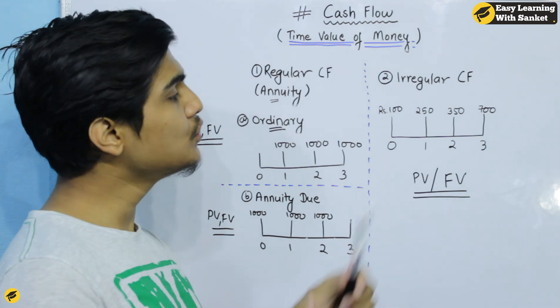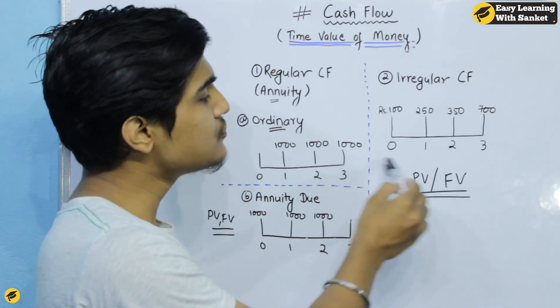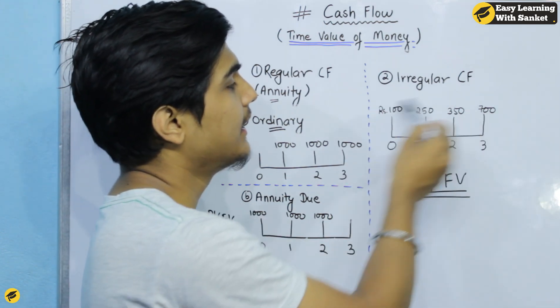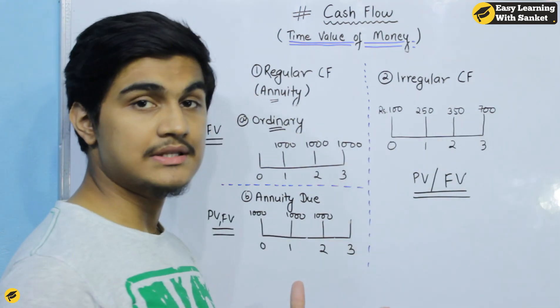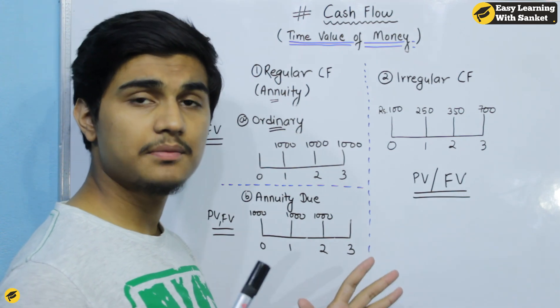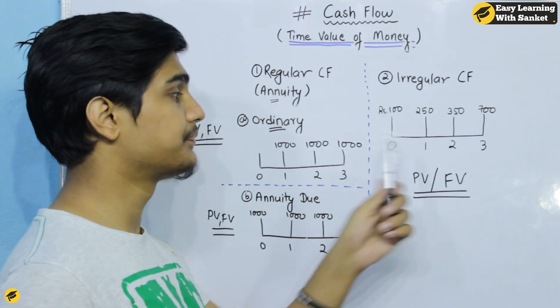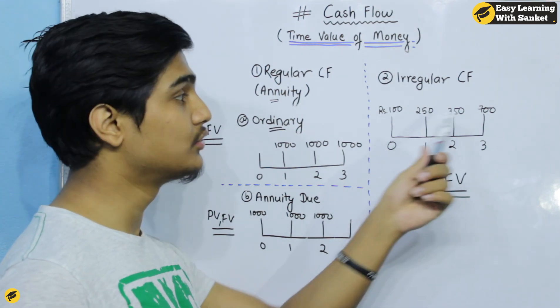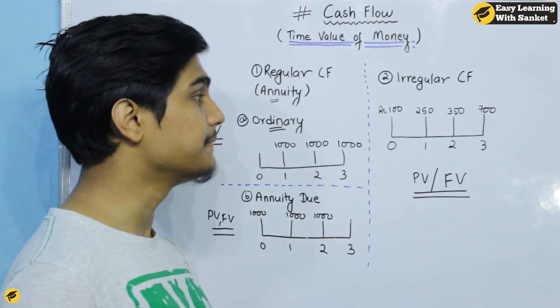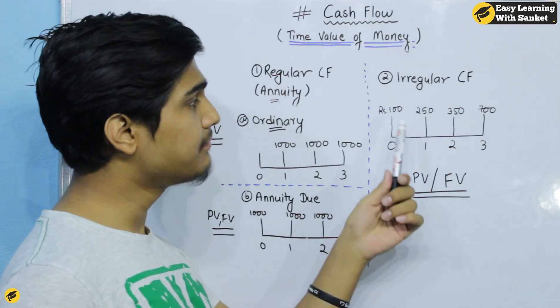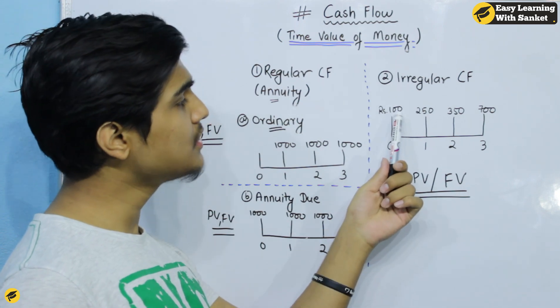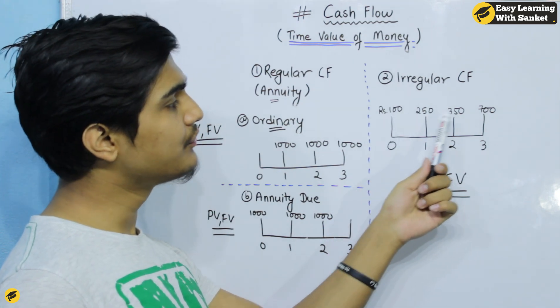This is a timeline which is better to imagine. So we need to use this time value of money concept — we need to use a cash flow timeline. For example, if you have a cash flow of $100...